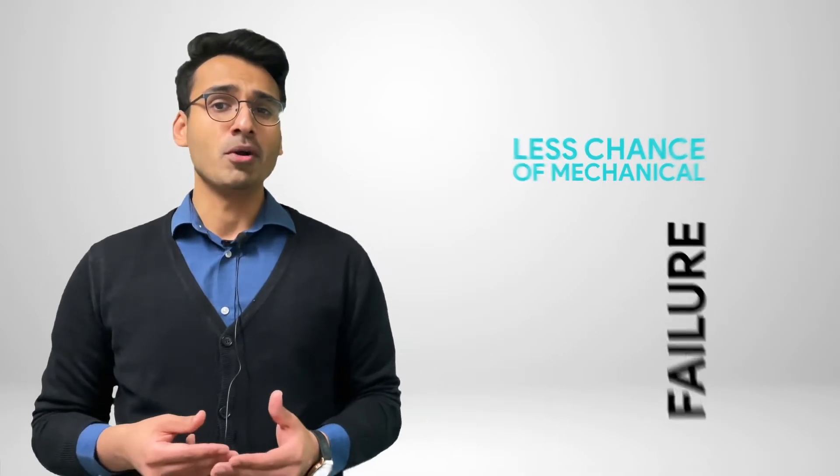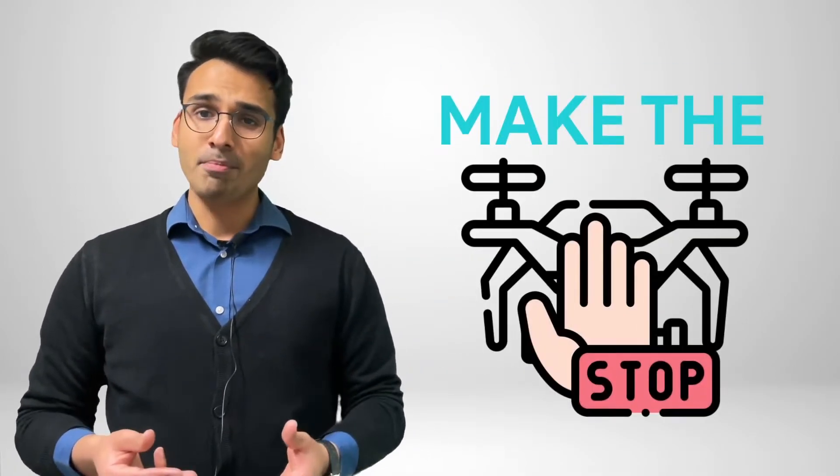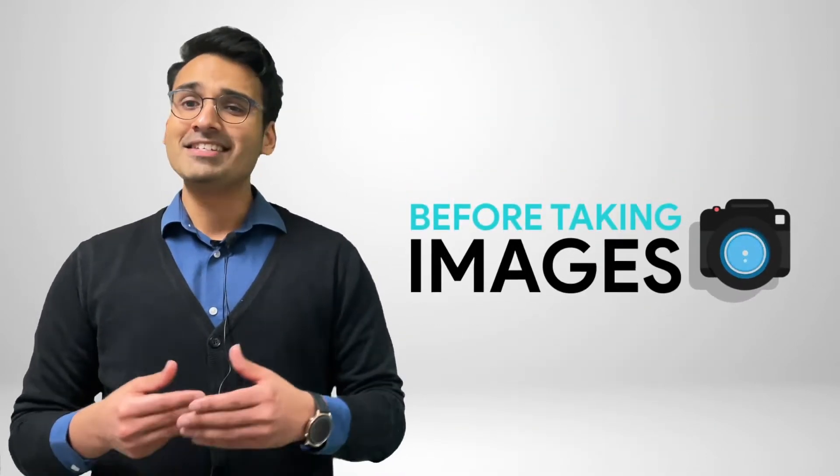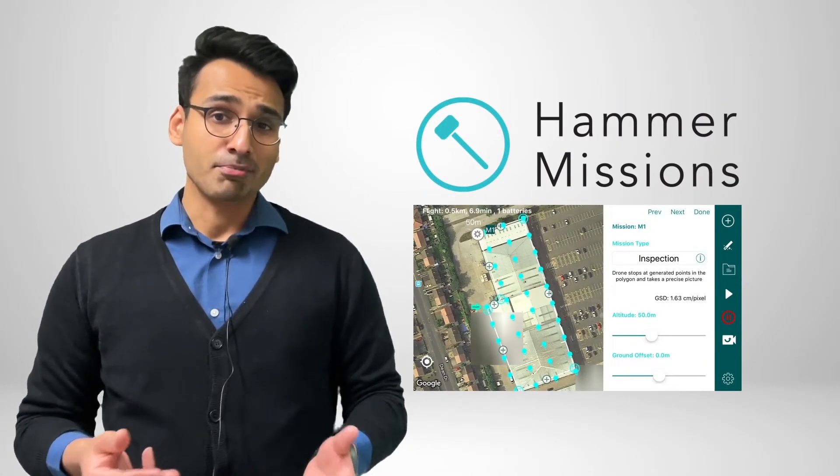A simple solution to using rolling shutters in drone applications is to make the drone stop before taking images or pictures. This can be easily achieved with Hammer Missions inspection modes.